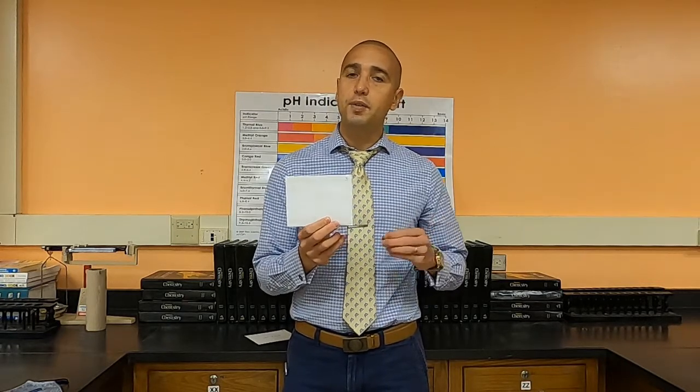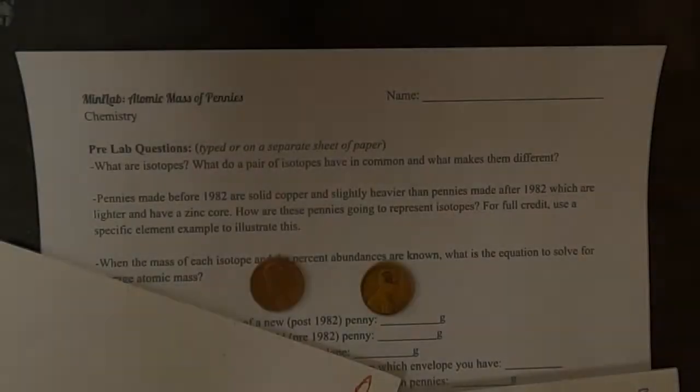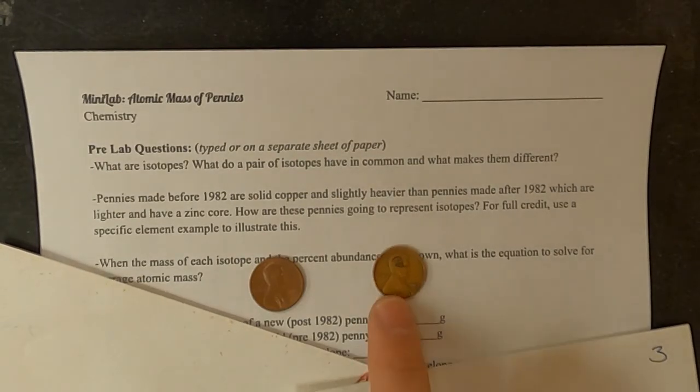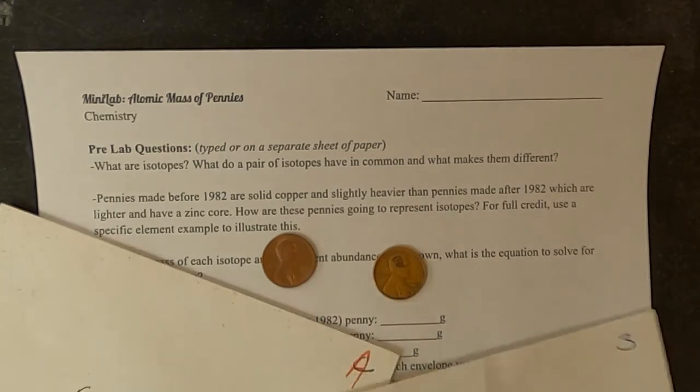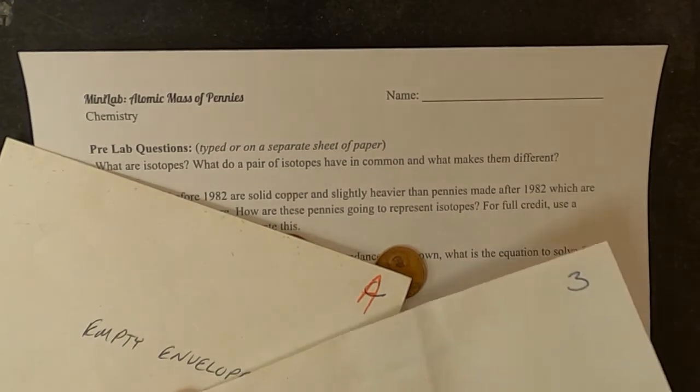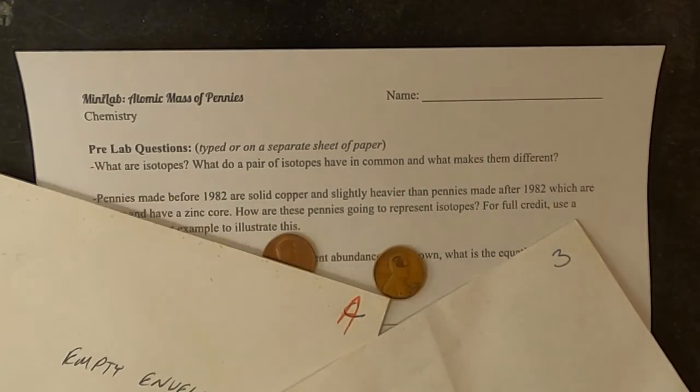So what you're going to do is take some measurements and try to figure out, in an envelope that is sealed, how many of these pennies are old and how many are new, how many are before 1982 and how many are after 1982. Here are the materials you'll need: an old penny, a new penny, an empty envelope, and an envelope that has a number or letter that has 10 pennies in it where some are old and some are new. It's sealed, you don't know, but we wrote them down ahead of time.